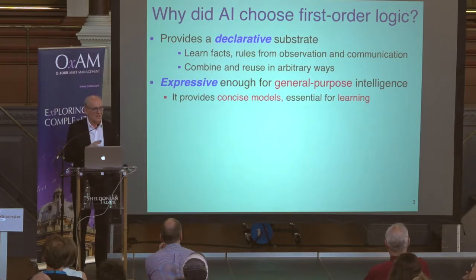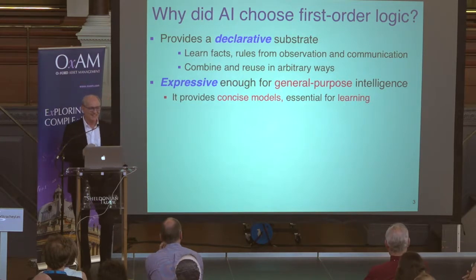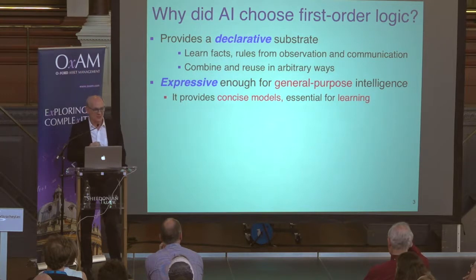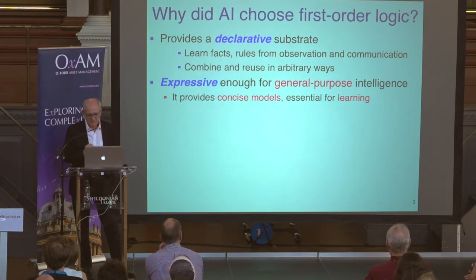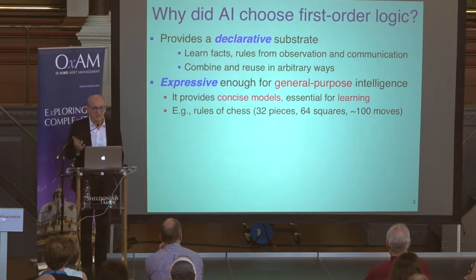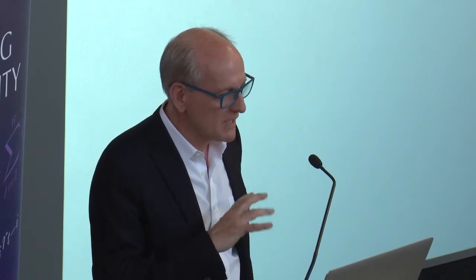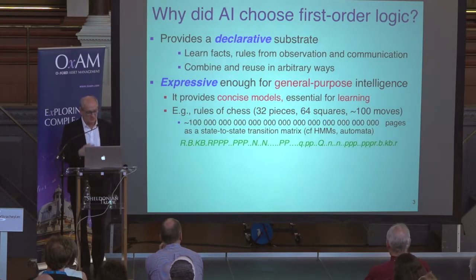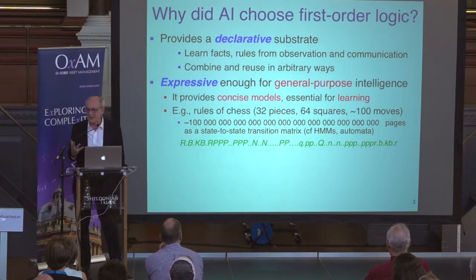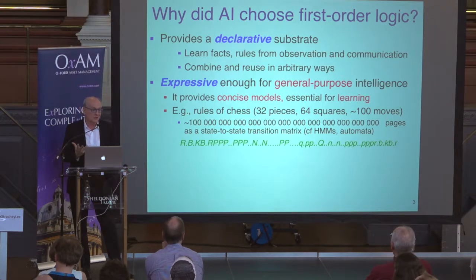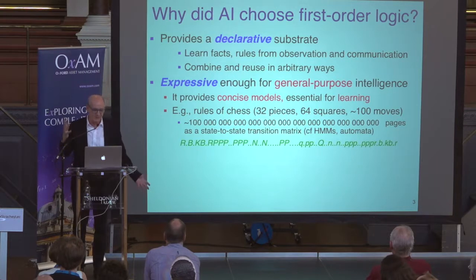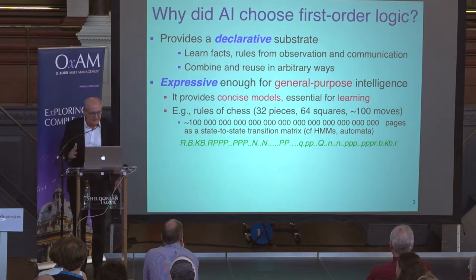First-order logic is also sufficiently expressive for most things you would want a general-purpose intelligence system to do. This expressive power is particularly important because without it, your models will not be concise, and if your models are not concise, you will not be able to learn them from any reasonable amount of experience. I'm talking to all you deep learning people: this is where deep learning is going to run into a brick wall. To illustrate this, chess has just 32 pieces and 64 places, lasting about 100 steps. But if you try to write the rules of chess in an inexpressive language — a hidden Markov model or automaton — it's about 10^38 pages.